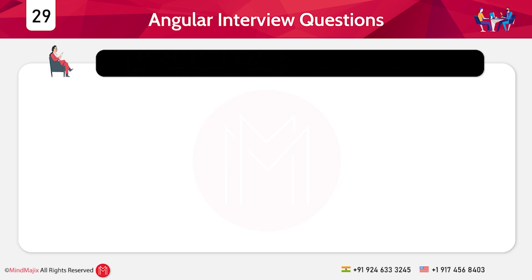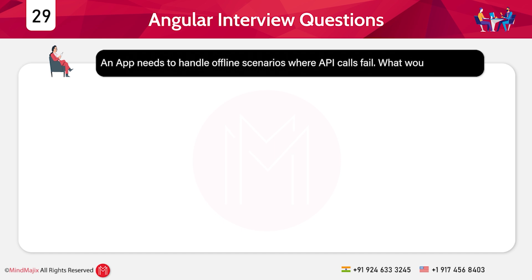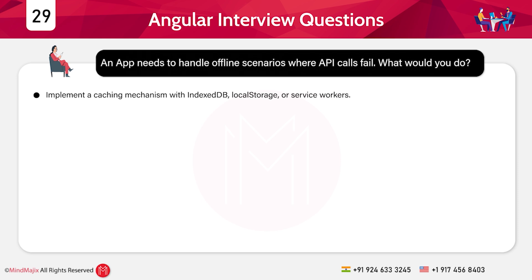The twenty-ninth question: An app needs to handle offline scenarios where an API call fails — what would you do? Implement a caching mechanism with IndexedDB, local storage, or a service worker.